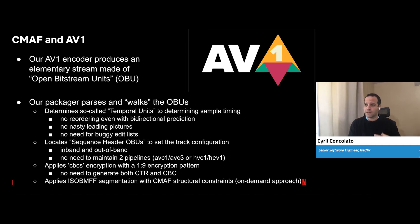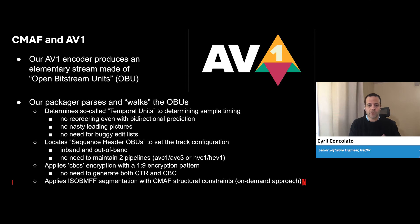Similarly, there's another simplification in the CMAF binding for AV1 around sequence header OBUs, which are equivalent — if you're familiar with AVC and HEVC — to parameter sets like VPS, PPS, and SPS. CMAF for AV1 recommends a way to do both in-band and out-of-band signaling.